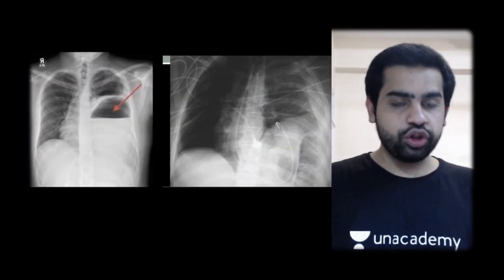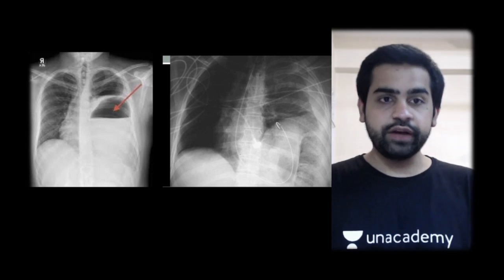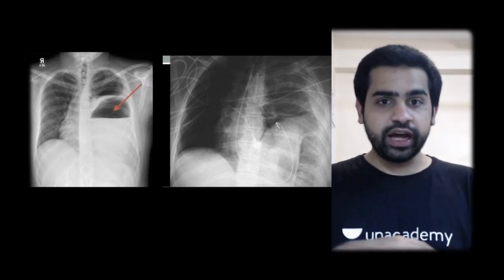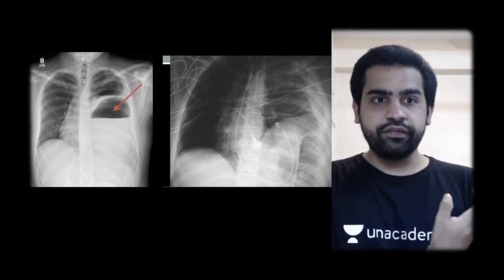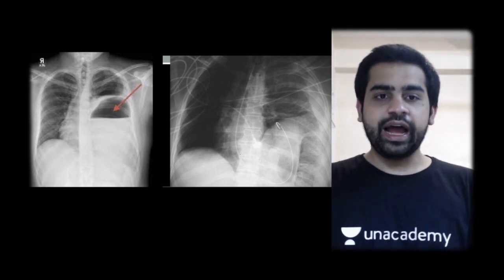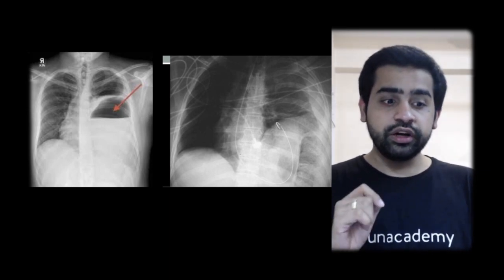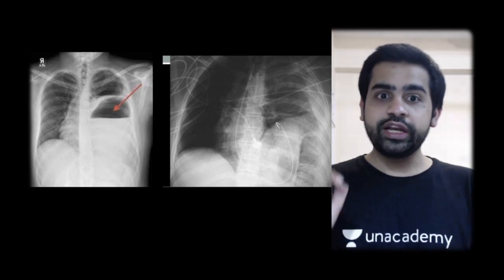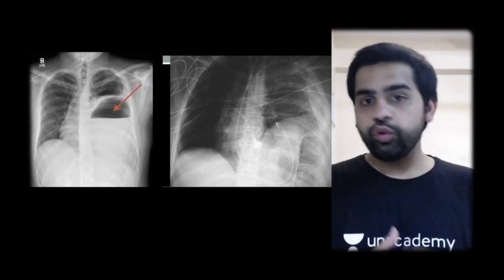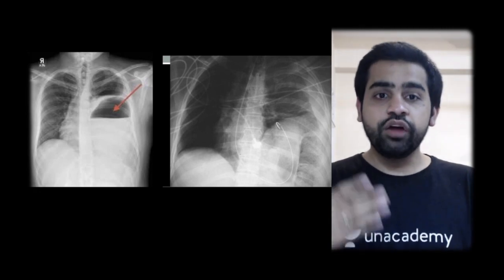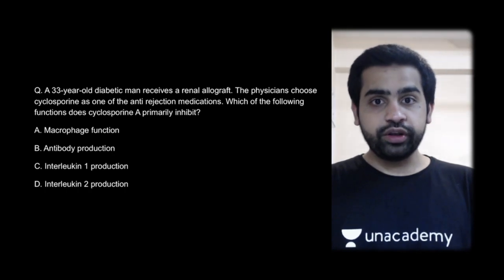On the left-hand side you can see two X-rays: one showing an air-fluid level because the stomach has herniated to the left side, and the other showing the nasogastric tube coiling in the chest. These X-ray images are from a patient who suffered a diaphragmatic injury with herniation of gastric contents into the thoracic cavity.